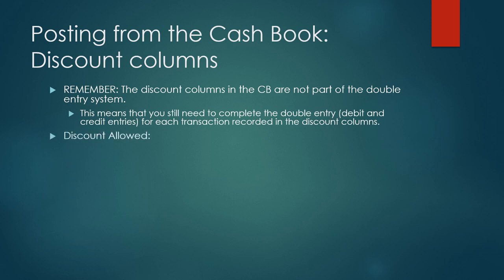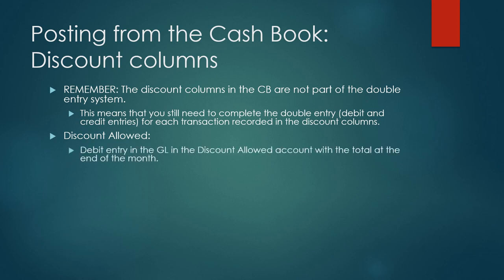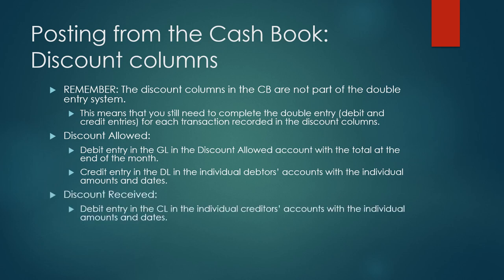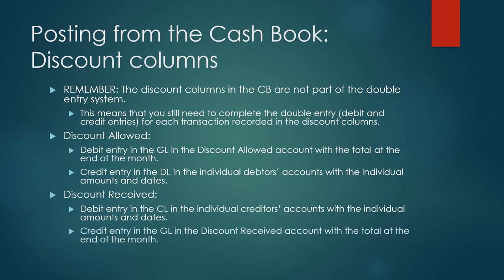For the discount allowed column, the debit entry will be in the general ledger in the discount allowed account with the total of the column at the end of the month. The credit entry will be in the debtors ledger in the individual debtors account with the individual amounts and dates. The discount received column will have a debit entry in the creditors ledger in the individual creditors account with the individual amounts and dates, while the credit entry will be in the general ledger in the discount received account with the total of the column at the end of the month.